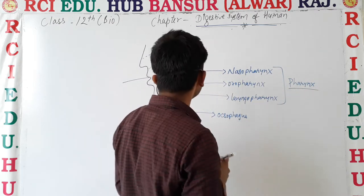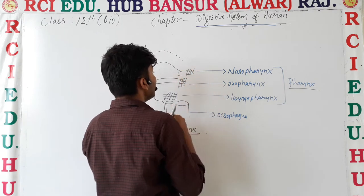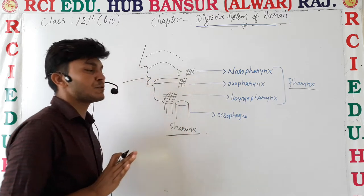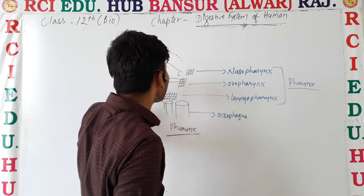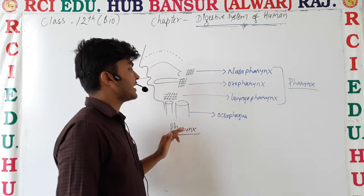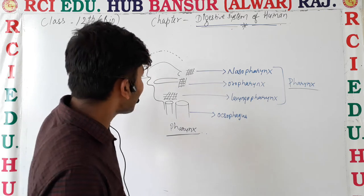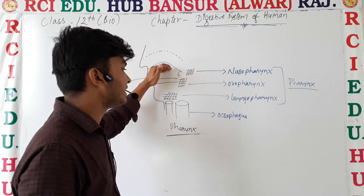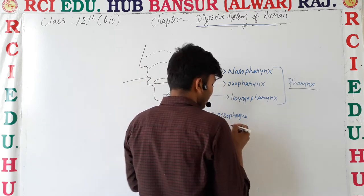Pharynx is a region. The region which is found between the buccal cavity, or oral cavity, and the esophagus — that region is known as pharynx.